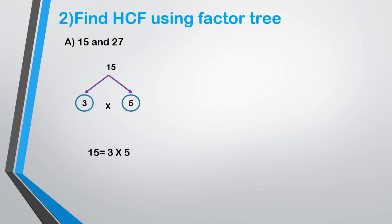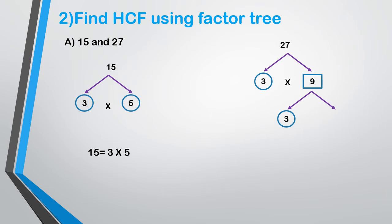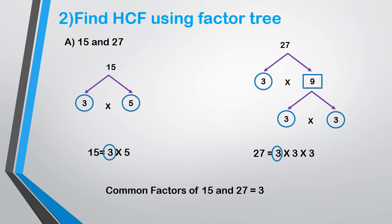So 15 is equal to 3 into 5. Now we draw the factor tree for 27. We split 27 as 3 into 9, since 3 nines are 27. Then 9 is split into 3 into 3. We can't split further because 3 has no other factors except 1 and 3. So 27 is equal to 3 into 3 into 3. Now we choose the common factors: both have 3. So the HCF of 15 and 27 is equal to 3.